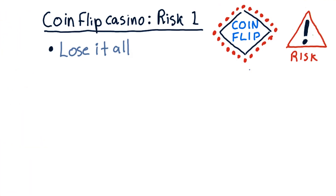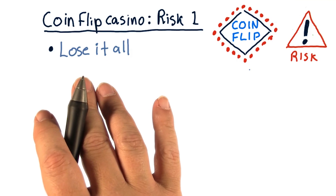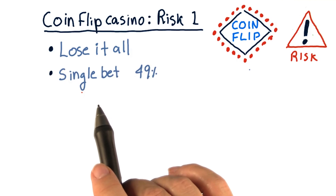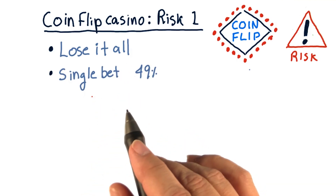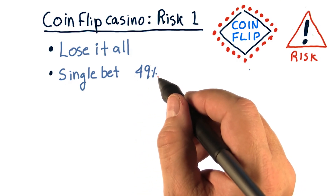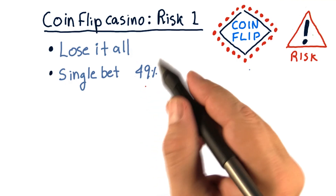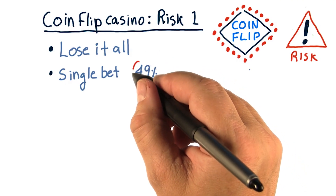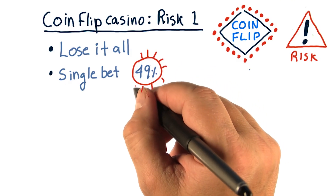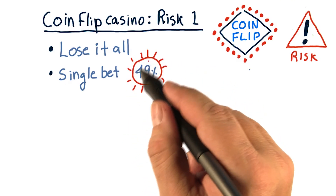There are a number of ways we might consider risk in this scenario. Let's look at the chance that you might lose it all. You put out your bets on the 1,000 tables and the coins are flipped. In the single-bet case, where you put all of your money on a single table, the outcome is determined by the flip of a single coin. Even though it's biased in your favor, there's still a 49% chance it'll come out against you. So if you put all your money on a single table for one coin, there's a 49% chance that you'll lose all of it.